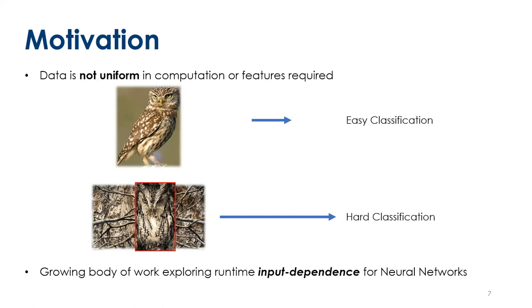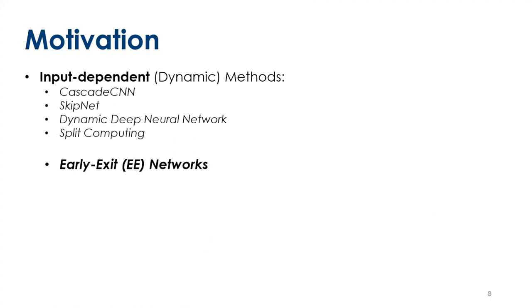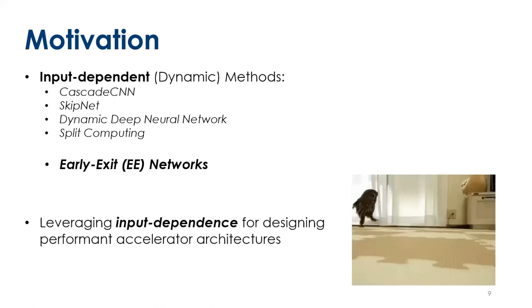So there's this growing body of work using input dependence to improve inference performance. This includes both software and hardware methods, things like Cascade CNN and SkipNet. But we're going to focus on a category of neural network architectures called early exit networks. Essentially, you're able to terminate a computation within a CNN at some earlier stage in that CNN and on average inference is faster.